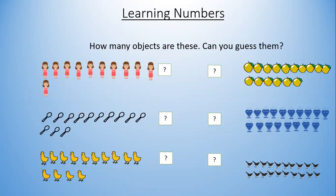There are 11 dogs. Can you count how many spoons are here? Now can you count how many hands are here? Now let's count the number of mangoes. Now count the number of diamonds. Now count the number of crows. Good job.